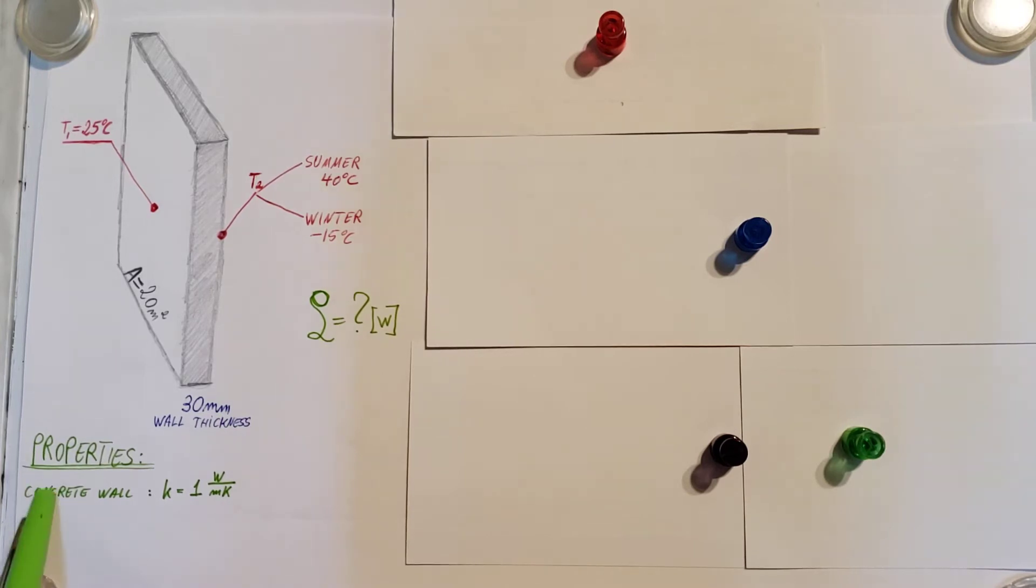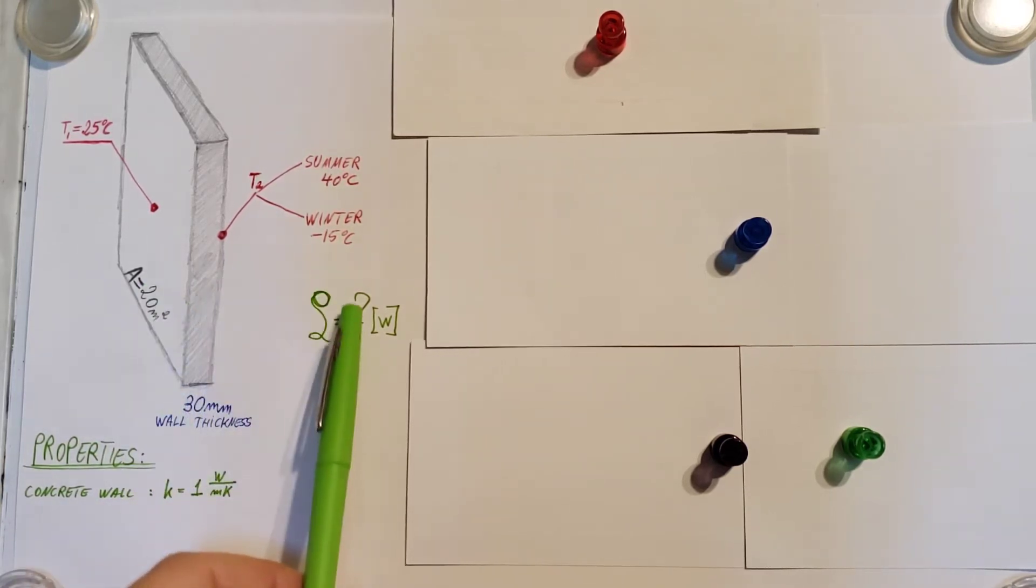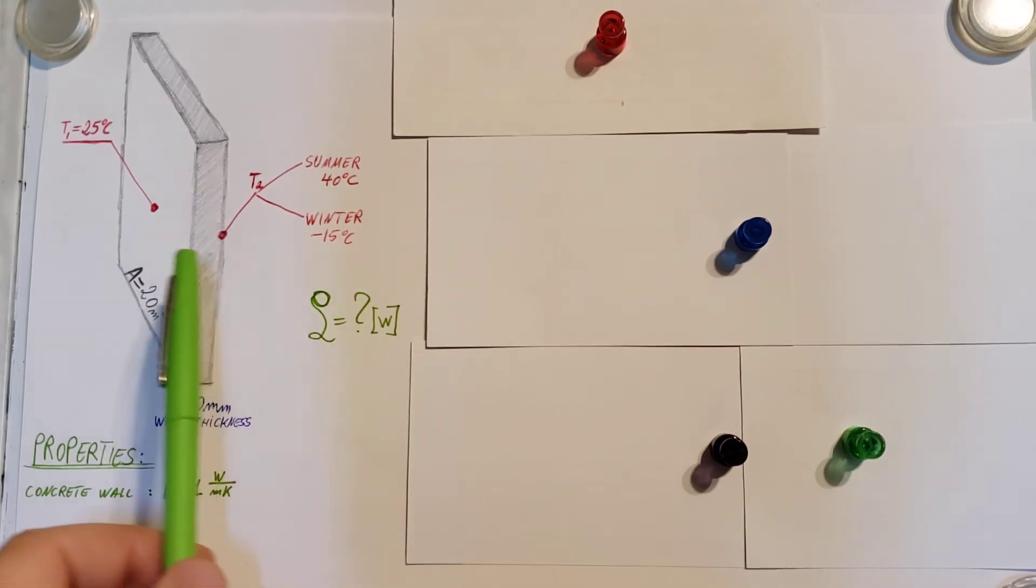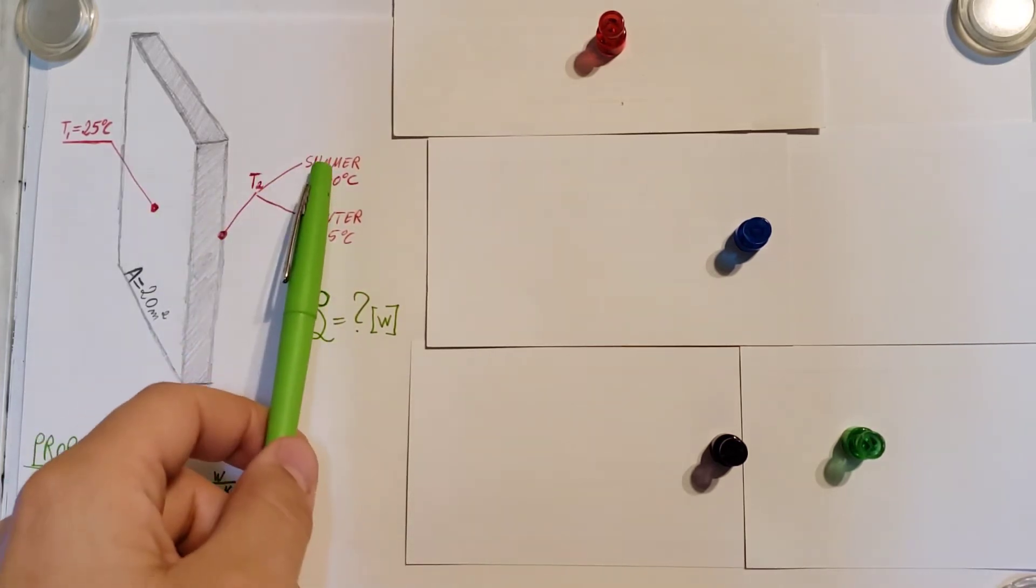We also know its thickness is 30 millimeters. We know the thermal coefficient of the wall is equal to 1 watts per meter Kelvin. And they want us to find the total heat loss through this wall in the summer and the winter.